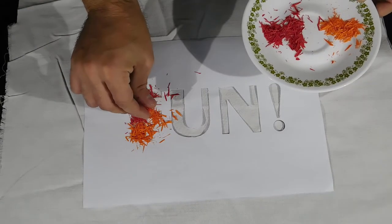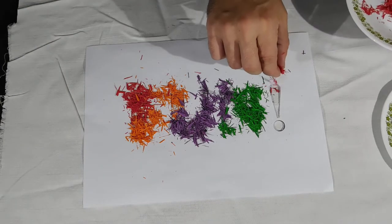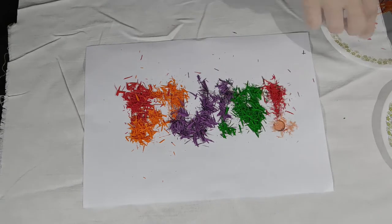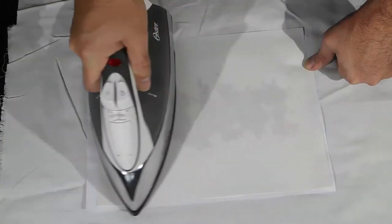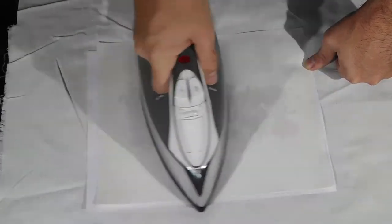Disperse the crayon waste over the design. Place a sheet of paper and make sure to cover all the crayon. Now take the iron and pass through all the paper for a couple of seconds.